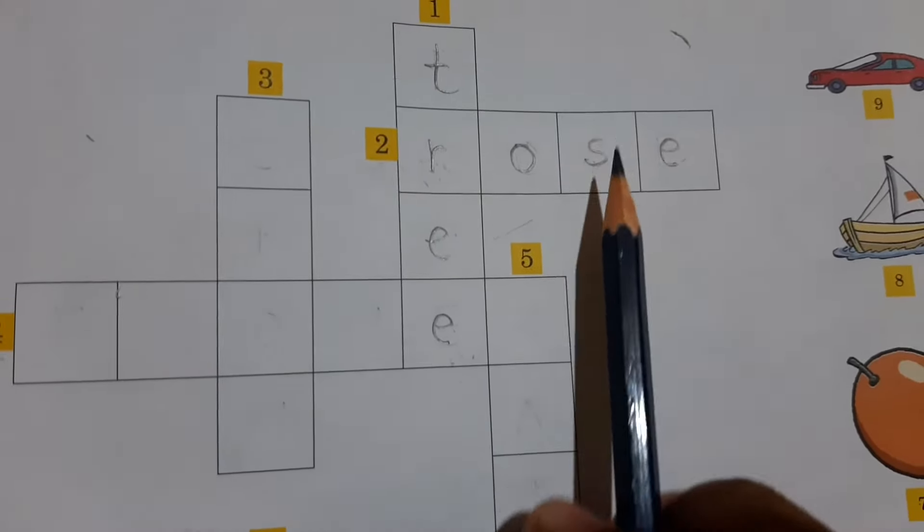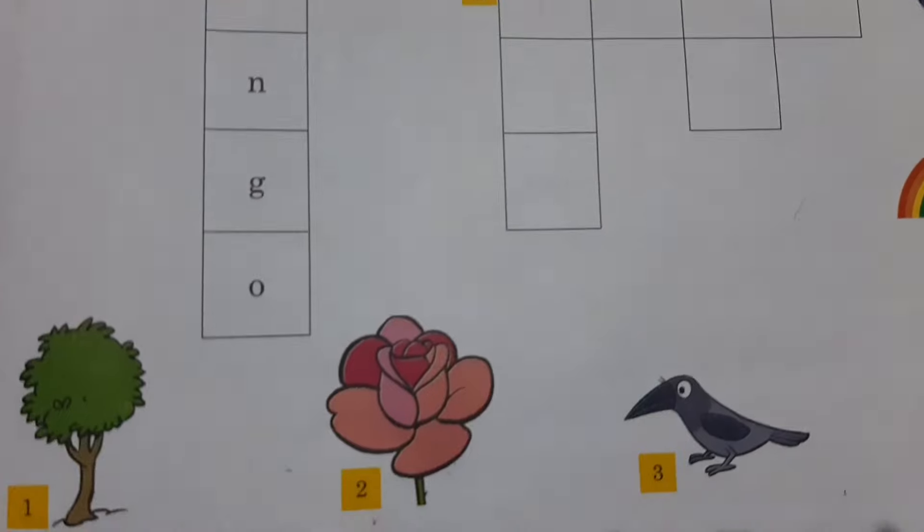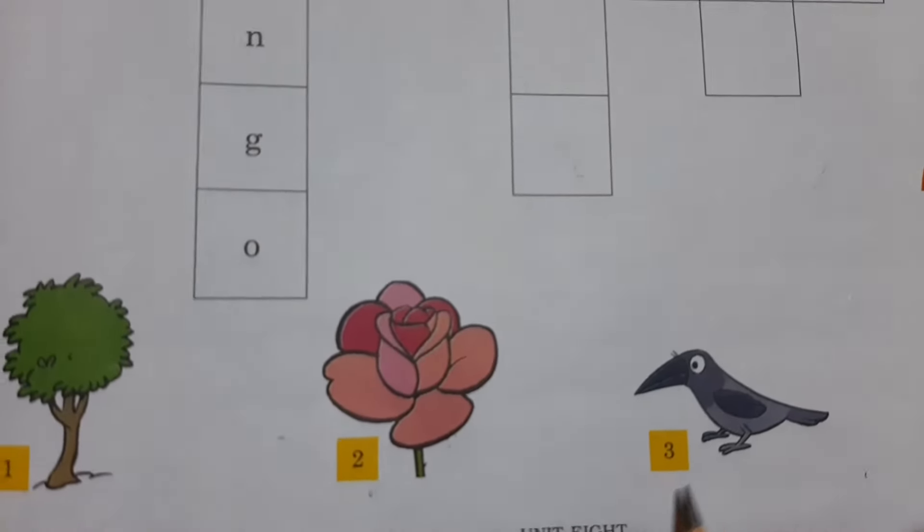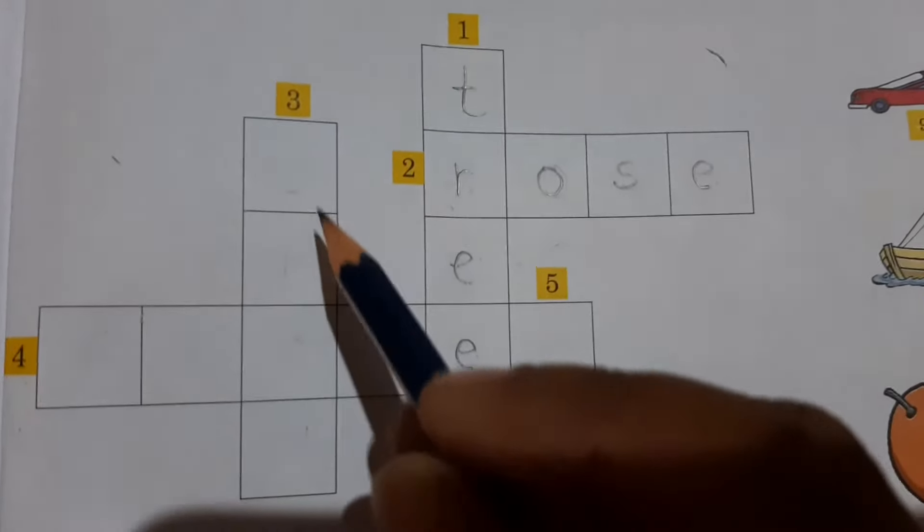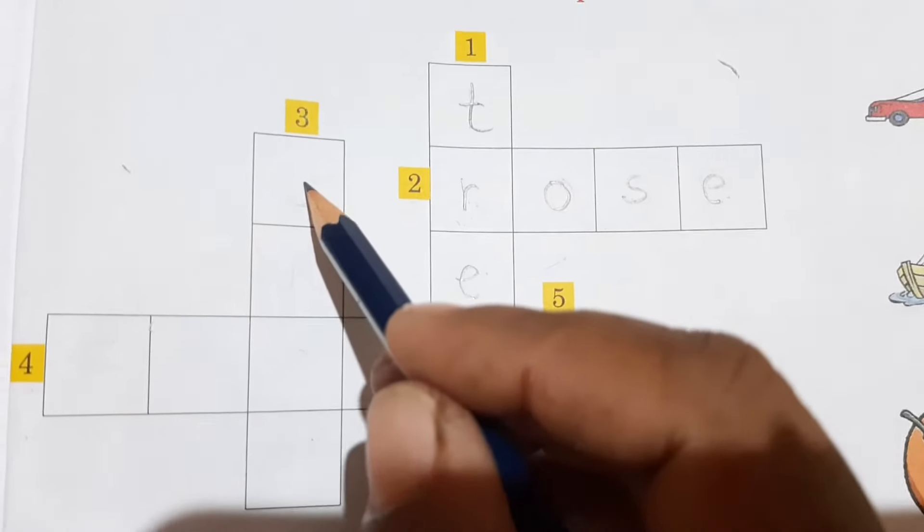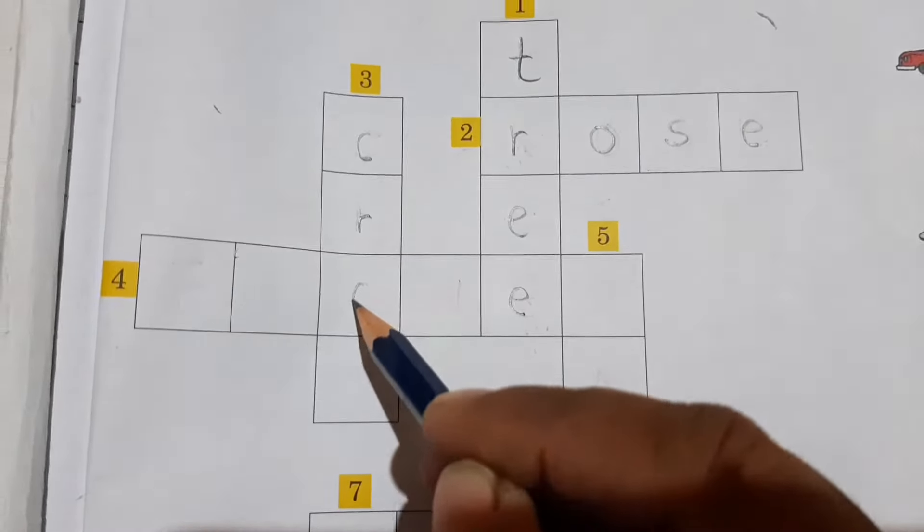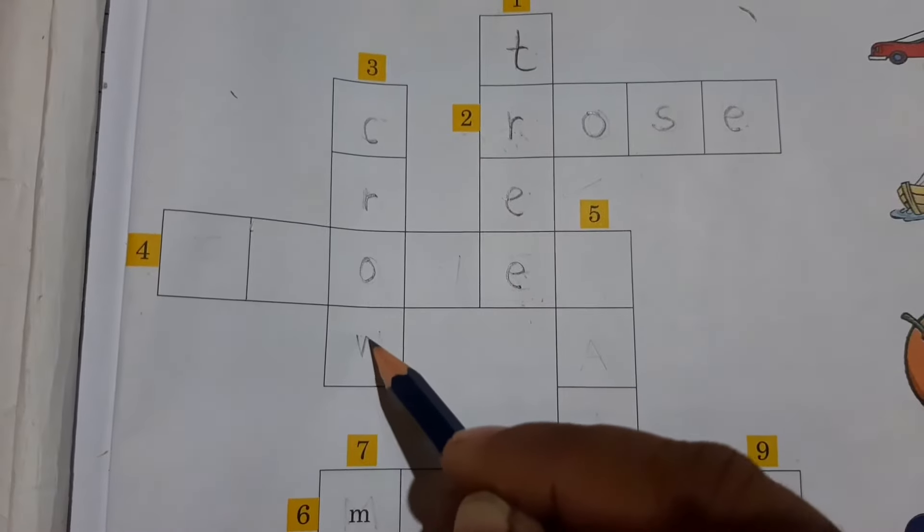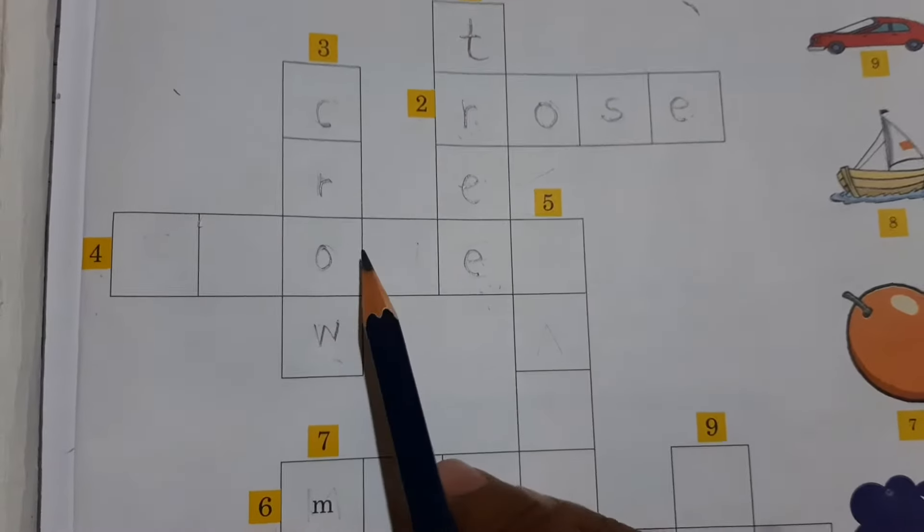Now we will write number 3. You can see here number 3. What picture is given on number 3? Number 3 is a crow. So we have to write down here the spelling of crow. What is the spelling of crow? C-R-O-W crow. Now see number 4.